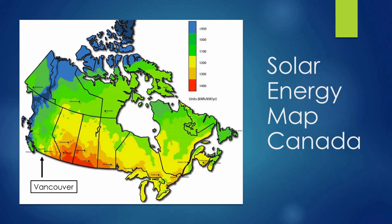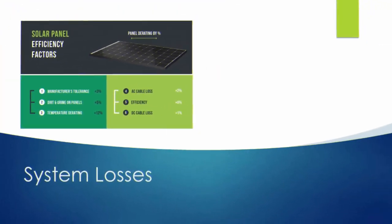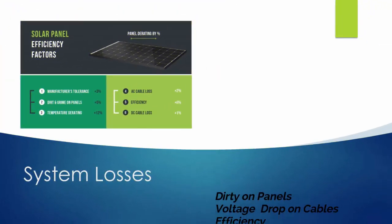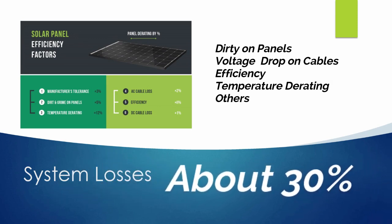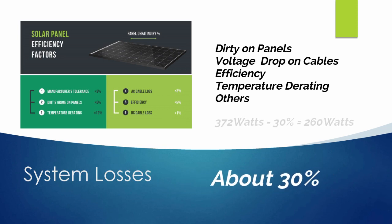That's the total amount of power we can expect to generate during one day. However, we won't be able to use all of that power because there are some losses to take into account. We could have dirt on the surface of the panel, voltage drops on the cables between the solar panel and the charge controller, and some inefficiencies in the way the controller regulates power to charge the batteries. If we take all of these into account, we can expect system losses of about 30%. So taking our total of 372 watt hours minus 30% system losses, we come out with a net value of 260 watt hours.